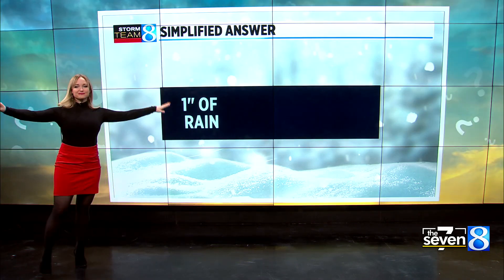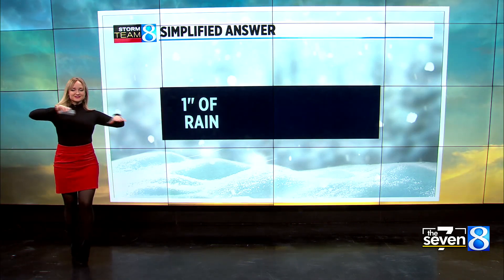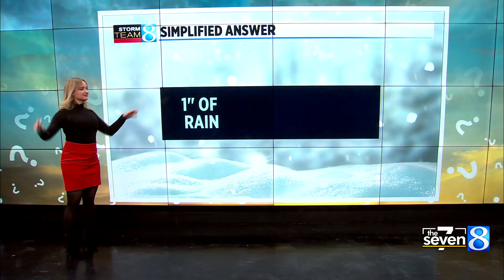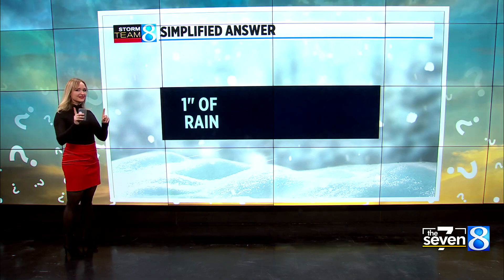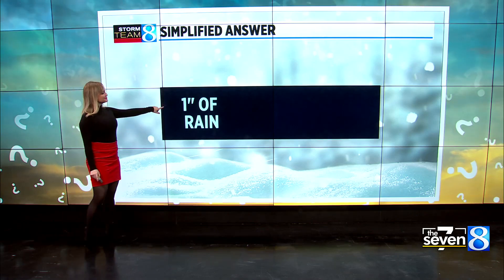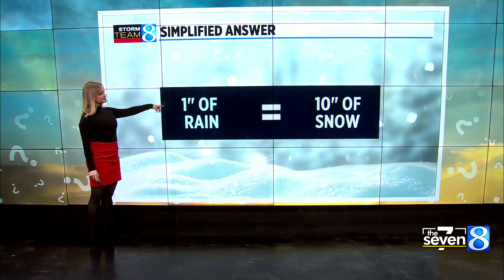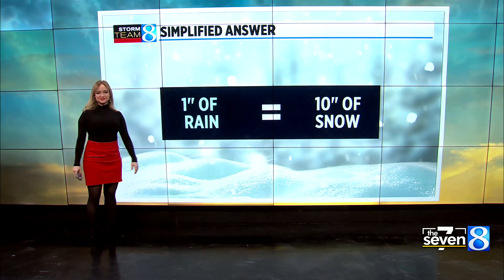Here's the simplified answer — just the bottom line. Usually one inch of rain equals about 10 inches of snow.